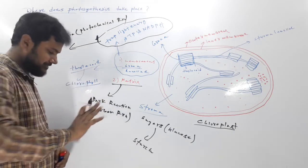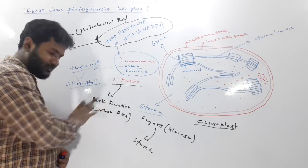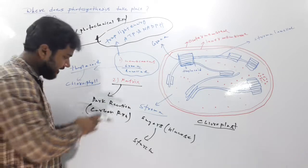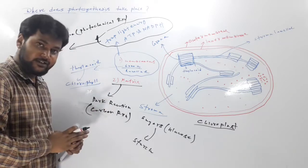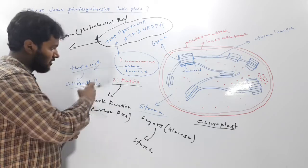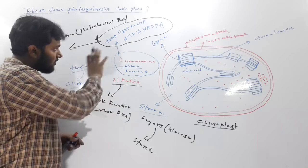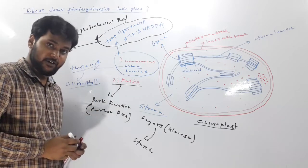This does not mean that it occurs in darkness or it is not dependent completely on light. It is called dark reaction because it is not totally a light-driven process, but it is also dependent on the products of light reaction, that is ATP and NADPH.